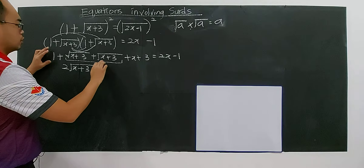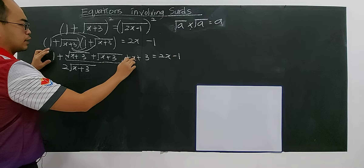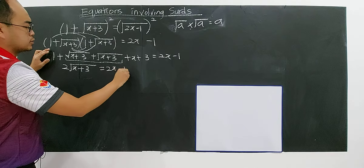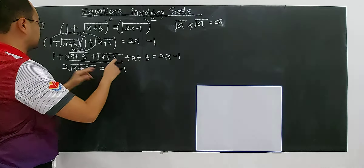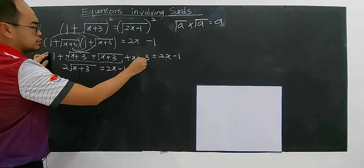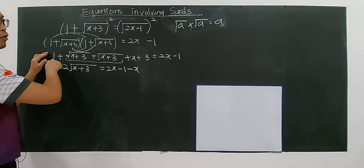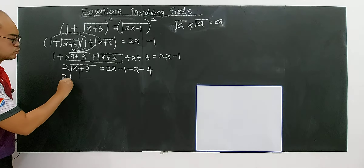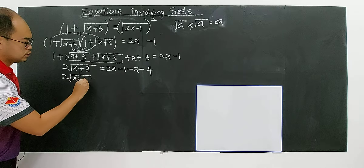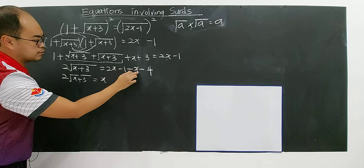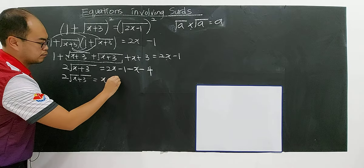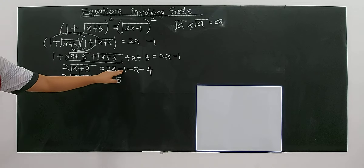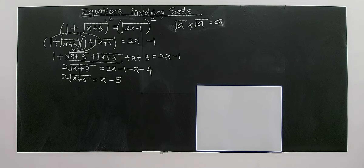Bringing all numbers and unknowns to the right hand side: 2x minus 1, minus x, and 3 plus 1 gives 4, so minus 4. So you get 2 square root of x plus 3 equals x minus 5.